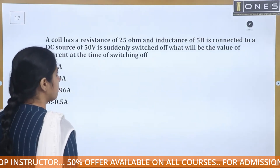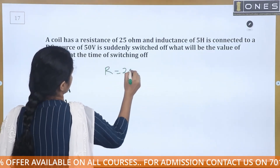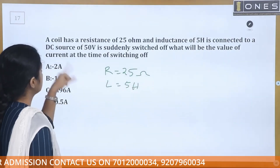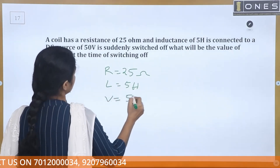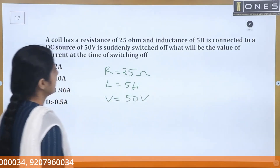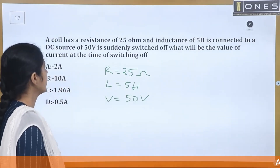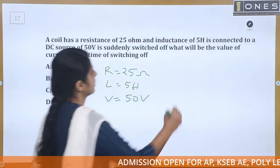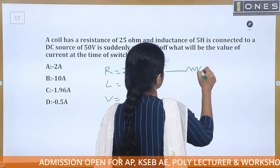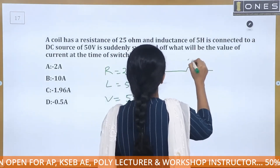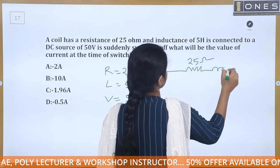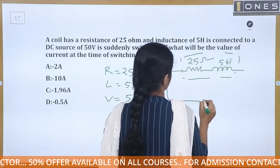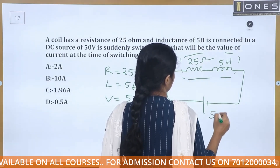A coil has a resistance of 25 ohms and inductance of 5 Henry, connected to a DC source of 50 volts. It is suddenly switched off. What will be the value of current at the time of switching off? One coil is connected — resistance is 25 ohms, inductance is 5 Henry. This is connected to a DC source of 50 volts.